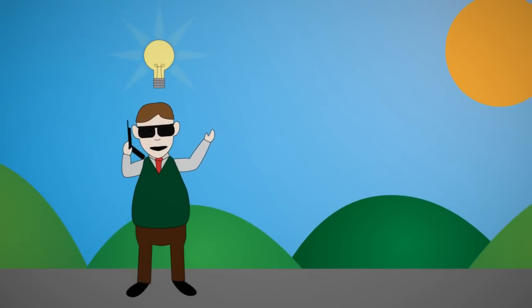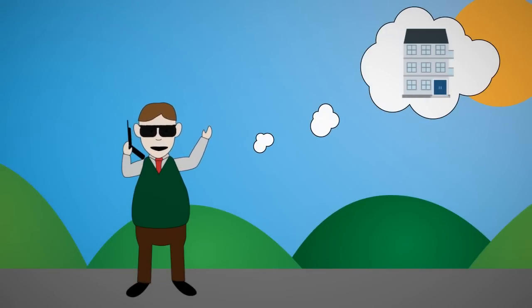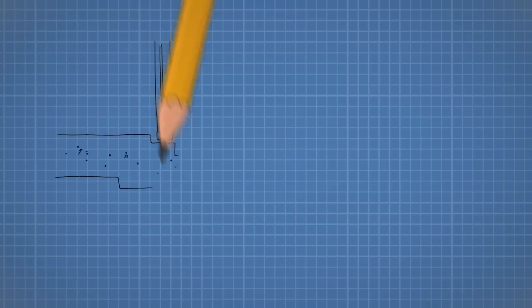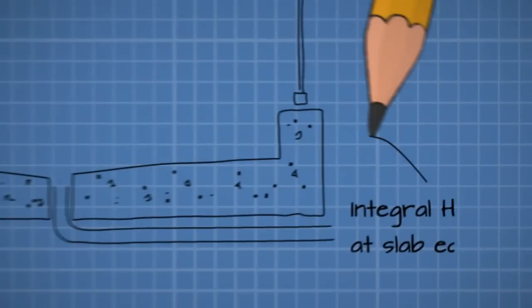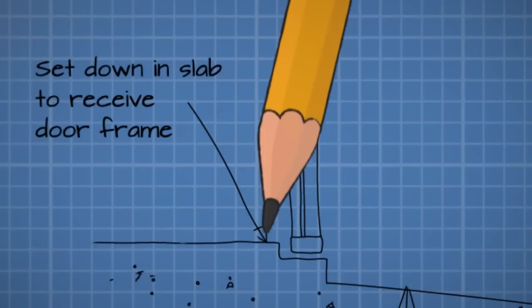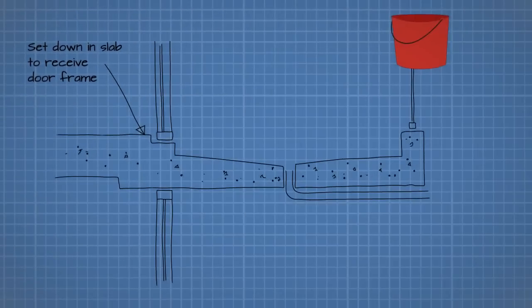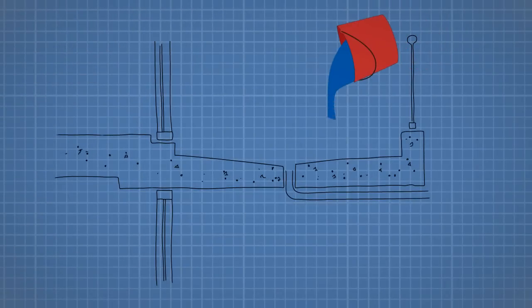Step one: a developer decides to build a set of apartments and an architect is asked to put together initial drawings. Ideally, at this time, balconies would be designed with integral hobs, integral falls and integral step-downs at sliding doors. This design lets most of the water shed away from the balcony without running internally or leaching to the outside.